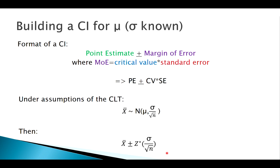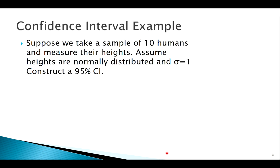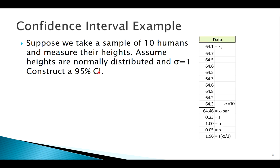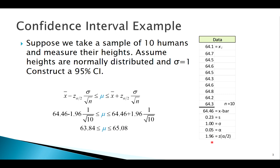Here's a simple example of constructing a z confidence interval. We're assuming normal, we know sigma, and we're building a 95% confidence interval. Our sample of 10 yields a sample mean of 64.46. We have our sample standard deviation, but we don't really need that because we know sigma. The only tricky part of calculating confidence intervals is making sure you use the right critical value.